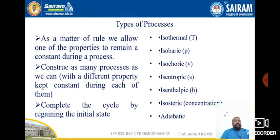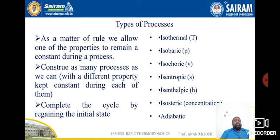Welcome to this basic thermodynamics class, module 1. We are going to discuss the types of processes — what is meant by state, path, process, and how to identify a process. As a rule, we allow one of the properties to remain constant during a process and construct as many processes as we can with different properties kept constant, completing the cycle by regaining the initial state.